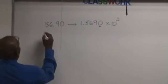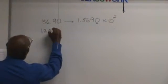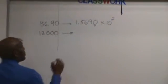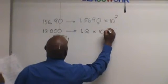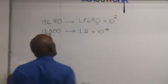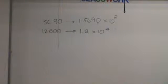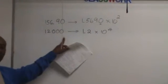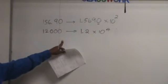Number two. What is this one? One point two nine, times ten to the two. How many of you got that? These zeros are not significant — they're placeholders. They're not significant.